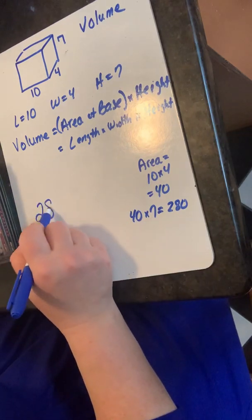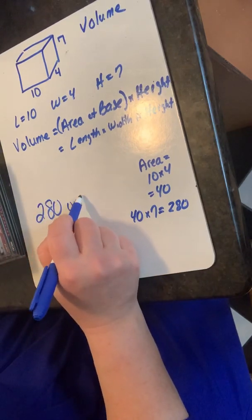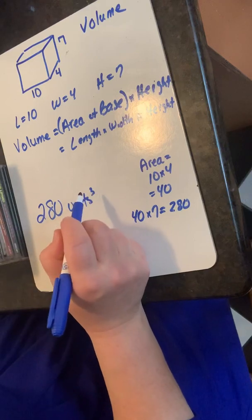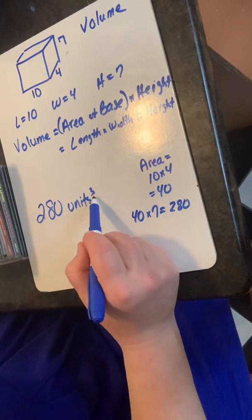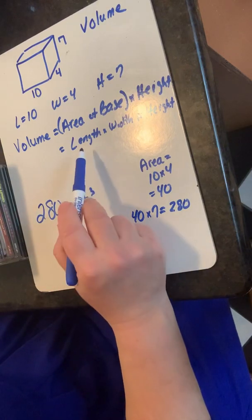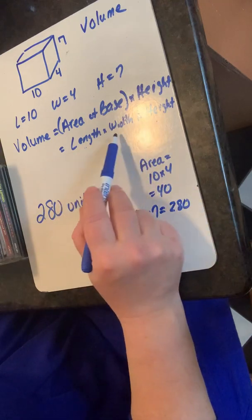Tengo doscientos ochenta unidades en cubos. I use the exponent three because I'm multiplying three measurements.